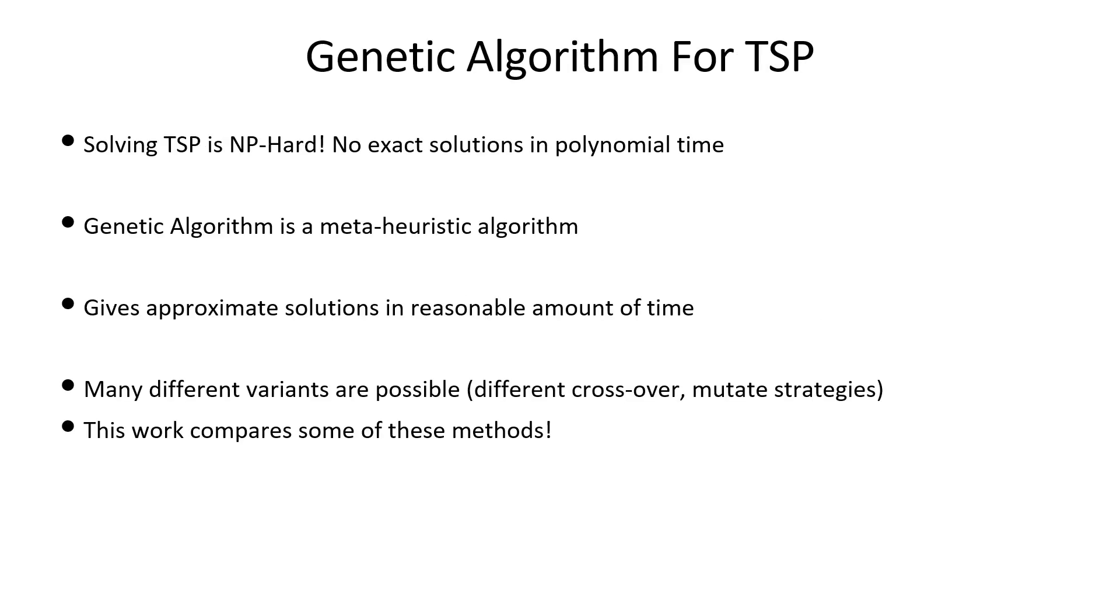Solving TSP is NP-hard. No exact solution in polynomial time is possible. Genetic algorithms are metaheuristic algorithms that give approximate solutions in reasonable amount of time.